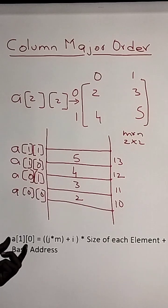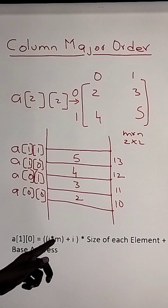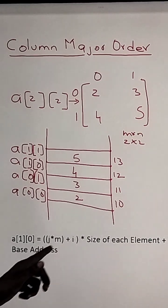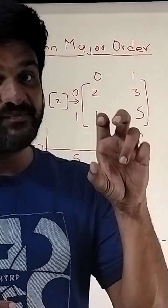So how can these elements be accessed? For example, if you want to access (1,0), the formula that is used is j*m + i*size of element + base address. This is how we can access the elements of a two-dimensional array by using column major order.